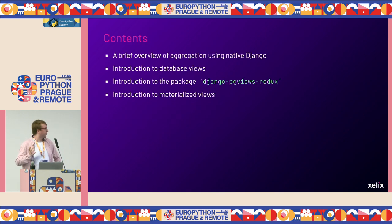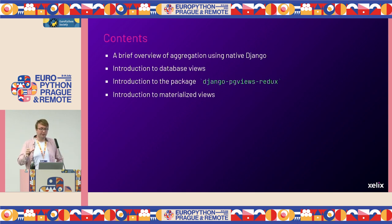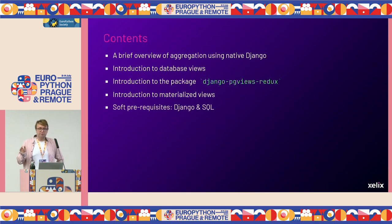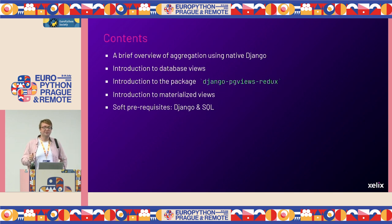So what are we going to be talking about? I'll give a brief overview of aggregating data in Django using the native Django ORM, then introduce database views, integrate them using a package called Django-PGViews-Redux, and then talk about materialized views — a special class that can help your performance. There are some prerequisites: you'll probably not enjoy this talk very much if you don't know some Django and some SQL, but I'll try to go through everything in quite a lot of detail.